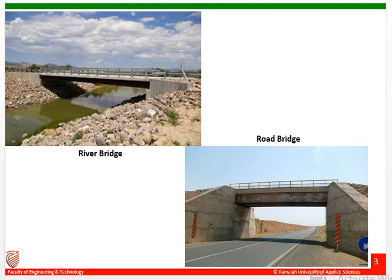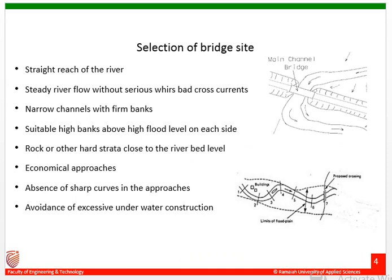In case of road bridges, the span can be fixed depending on the dimension of the road, shoulder, and drainage on both sides. The height can be fixed based on the vehicle requirements using that road. But for river bridges, you always have to fix dimensions depending on site conditions and flow parameters, which requires many calculations. That's the reason hydraulic design is very important for river bridges.